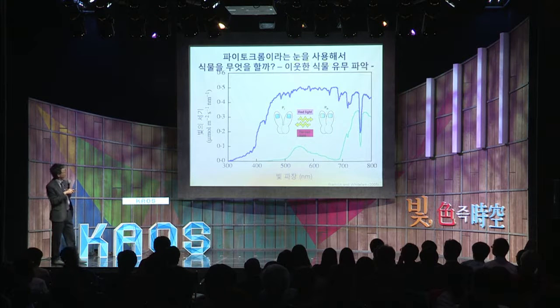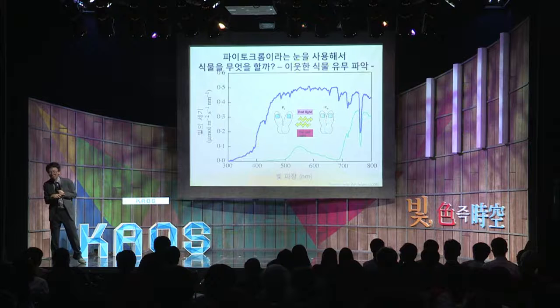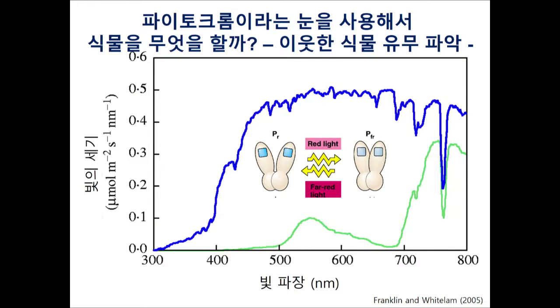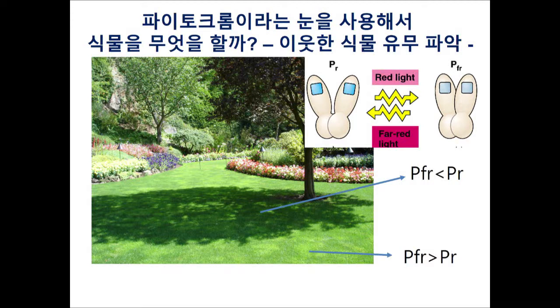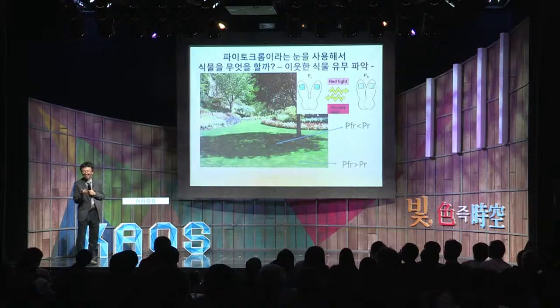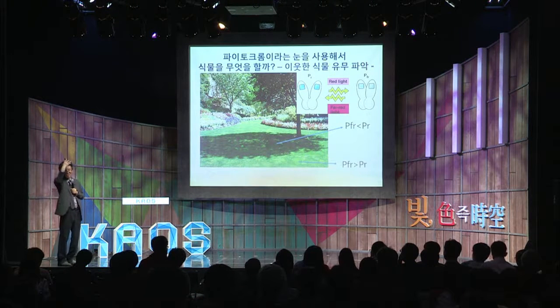그걸로 알아낼 수 있다면, 식물은 옆에 다른 식물이 있나 없나를 알 수 있는 거예요. 파이토크롬이 광 스위치라고 말했어요. 빨간색에 의해서 PFR이 되고, 원적색광에 의해서 PR이 된다고 했습니다. 그늘이 없을 때는 거의 1대 1 상태로 있겠죠. 그러다가 나무 그늘에 들어가면 원적색광이 많기 때문에 주로 PR 상태가 되겠죠. 나무 그늘에서는 PR이 굉장히 많고, 그늘이 아닌 곳에서는 PFR이 훨씬 많은 상태가 될 거예요. 식물 옆에 있는 또 다른 식물은 친구일까 적일까요? 적이겠죠.